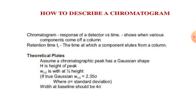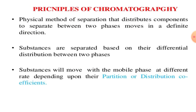The chromatogram is the detector response versus time, showing when various components elute from the column. It gives the retention time, denoted by TR. Theoretical plates assume a chromatography peak has a Gaussian shape, with peak height H and width at half height W-half. For a true Gaussian, W-half equals 2.34 sigma, where sigma is the standard deviation.